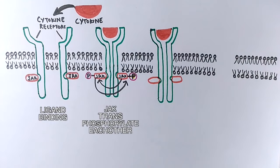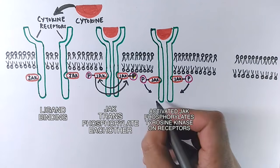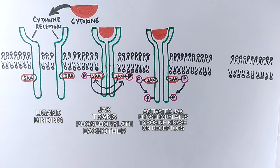In the next step, these phosphorylated JAK kinases then phosphorylate tyrosines on the cytokine receptors, creating phosphorylated tyrosine docking sites for STAT proteins as shown in the diagram.